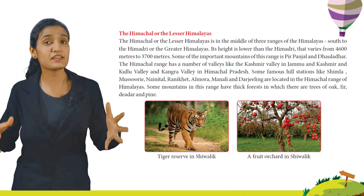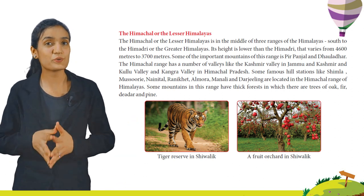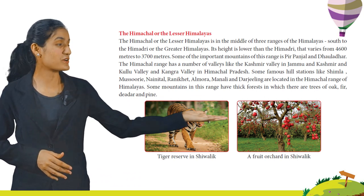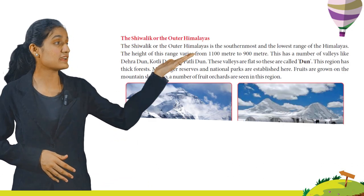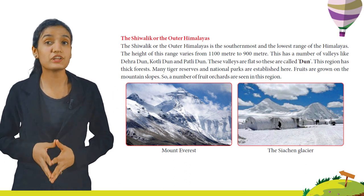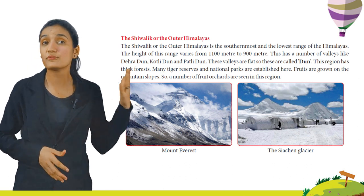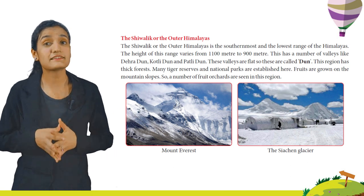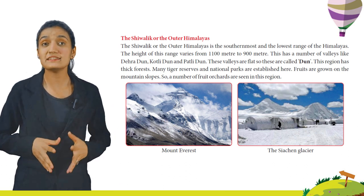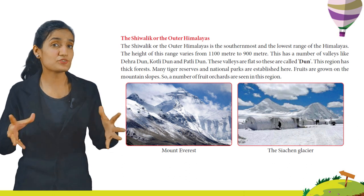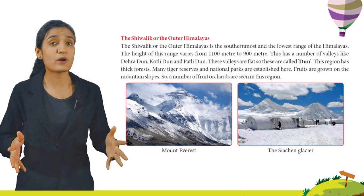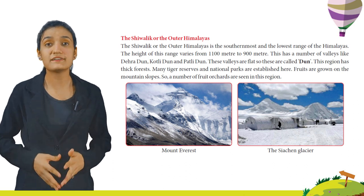Some mountains in this range have thick forests with trees of oak, fir, deodar and pine. Here you can see pictures of Tiger Reserve in Shivalik. The Shivalik or the Outer Himalayas is the southernmost and the lower range of Himalayas. The height of this range varies from 900 meters to 1,100 meters. This has a number of valleys like Dehradun, Kotlidun and Patlidun. These valleys are flat so they are called dun. This region has thick forests and many tiger reserves and national parks. Fruits are grown on the mountain slopes, so a number of fruit orchards are seen in this region.